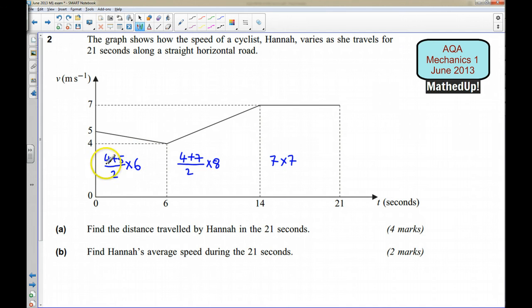Okay so we can work each of these out. We've got 9 divided by 2 which is 4.5 times by 6 which is going to give me 27. Over here I've got 4 plus 7 which is 11 divided by 2 which is 4.5 times by 8 which is going to give me 44.